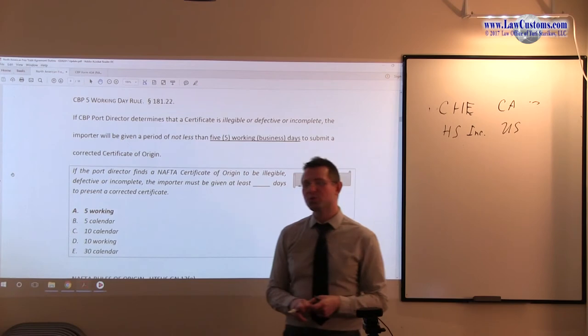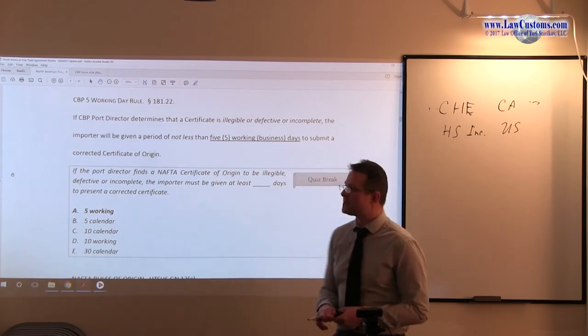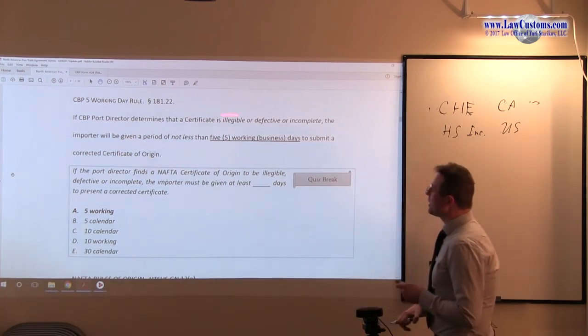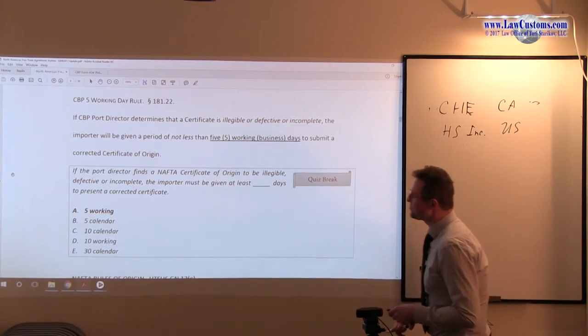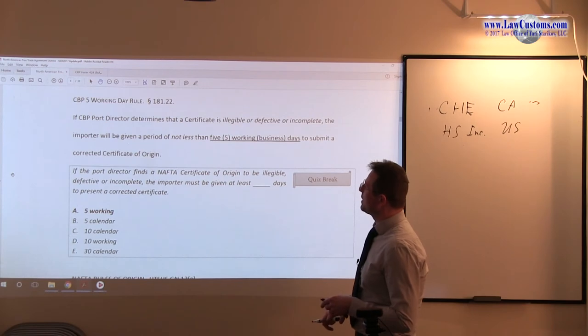But this one is an oddball. This five working day rule says that if Customs finds out that there is something wrong with the certificate of origin, they may issue a notice.